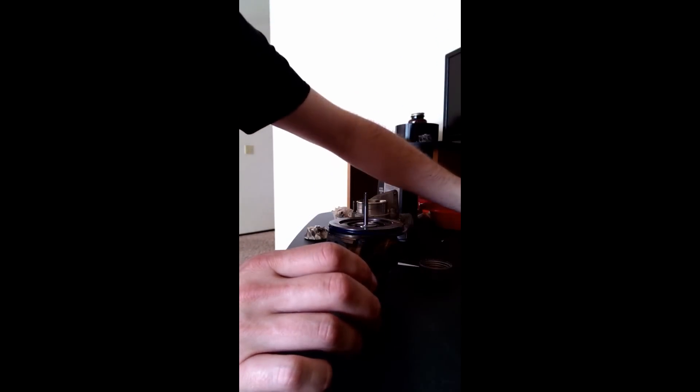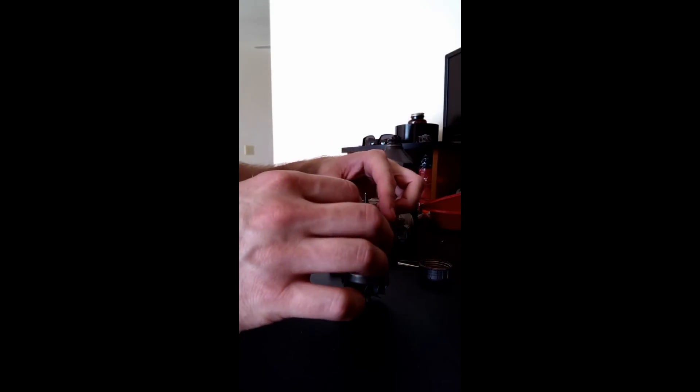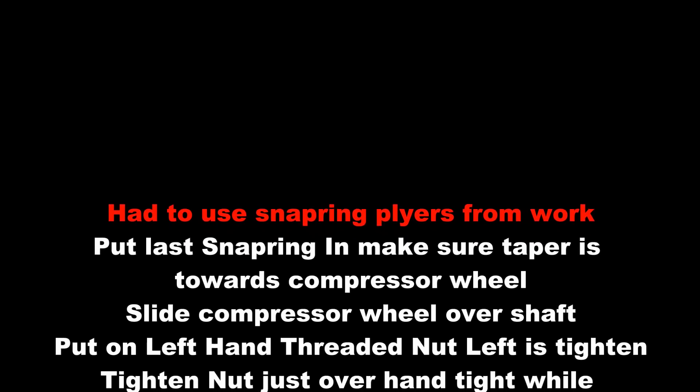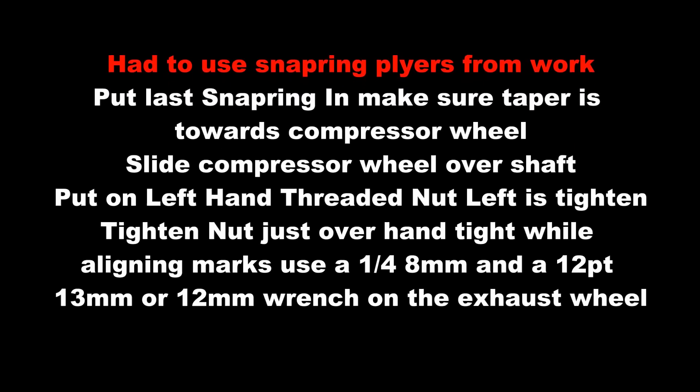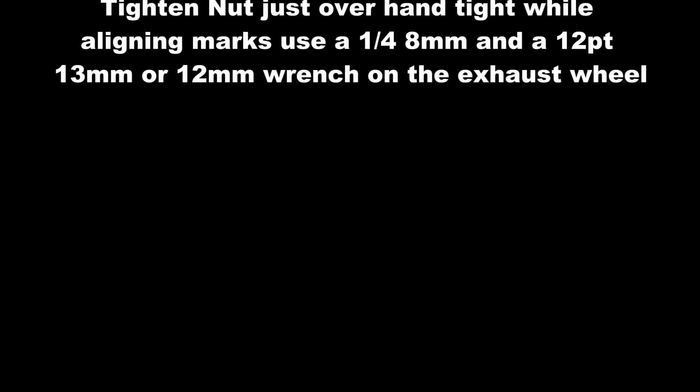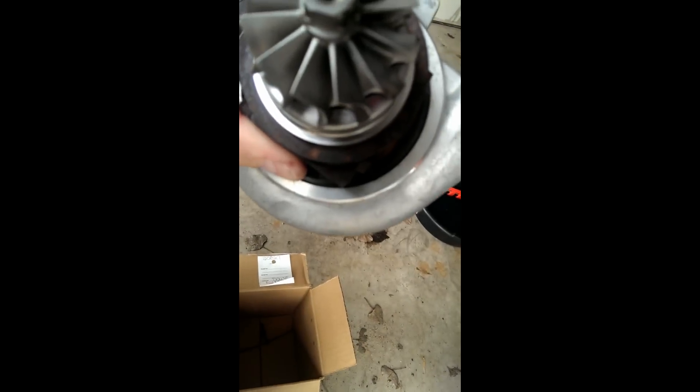So now you can use the new c-clip. I prefer to use the old ones. I don't know why, it's just a preference. Okay. Turbo all the way back together. I had to put the snap rings, had to do the snap rings at work because I didn't have any snap ring pliers. So as you can see, that snap ring is in there.